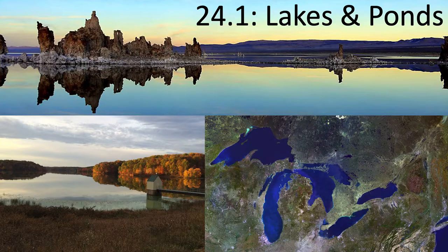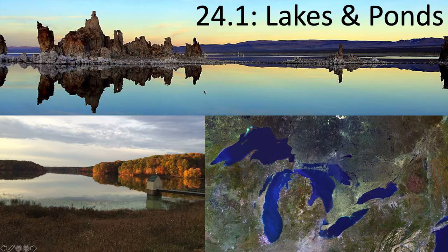Major events on Earth shape lakes: shifts in Earth's crust creating depressions, glacial erosion and decomposition, damming of streams, and quarries and surface mines are just some examples. Mono Lake is a high mountain lake in California that is not man-made — it was formed from glacial erosion.